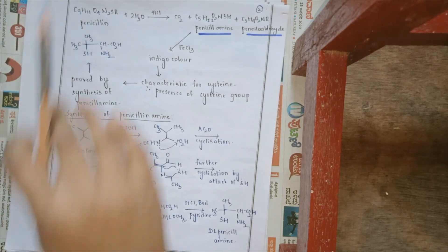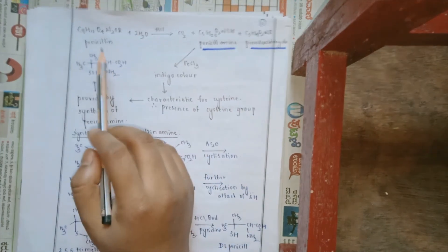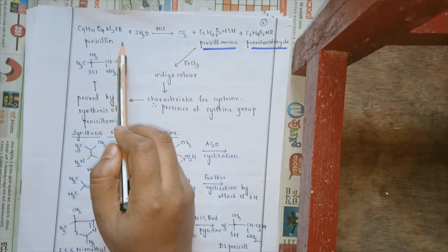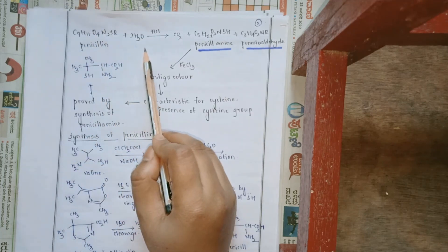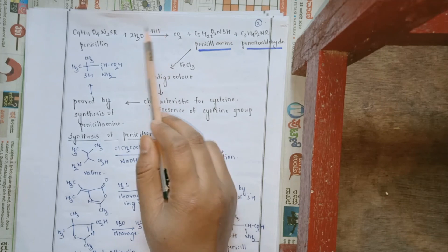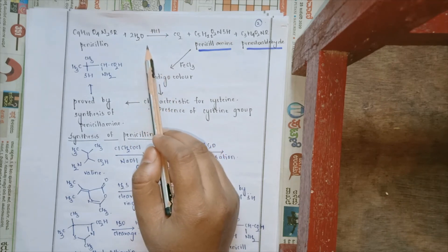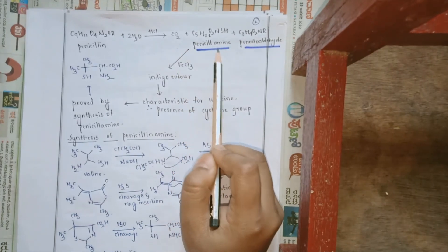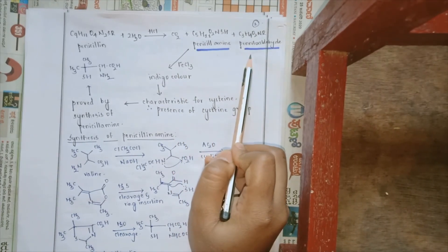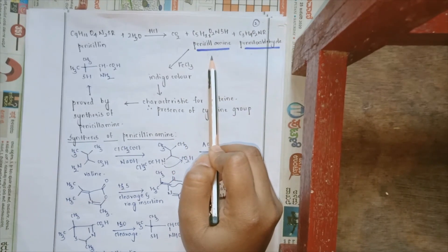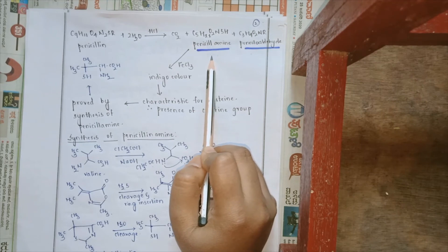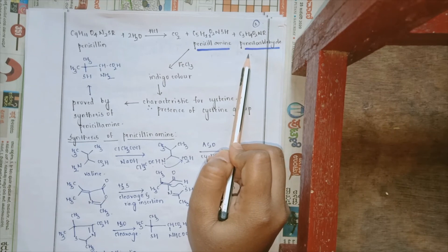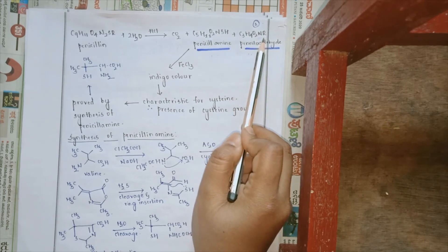The molecular formula of penicillin is C9H11O4N2SR, which upon hydrolysis in dilute HCl will yield carbon dioxide, penicillin amine, and peniloaldehyde. Penicillin amine is the same for all penicillin structures, and peniloaldehyde varies depending on the R group.